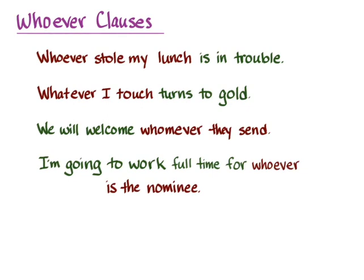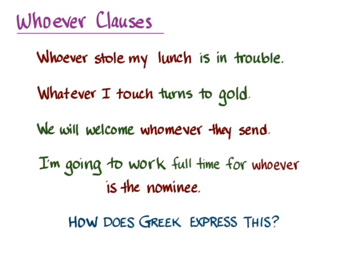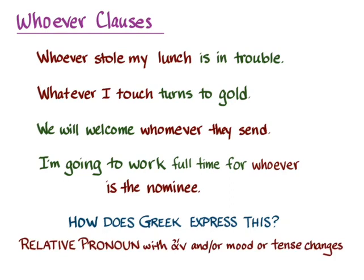English grammarians call these 'whoever clauses' indefinite noun clauses, and that will be a useful way for us to think of them later on in this video. But now let's ask how Greek expresses the same ideas. It uses a relative pronoun, usually with the particle an, and with mood or tense changes.